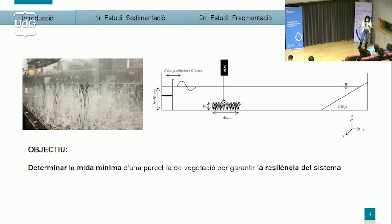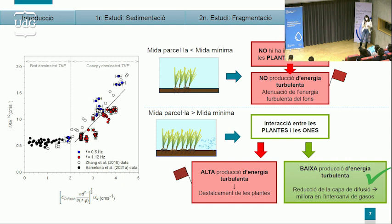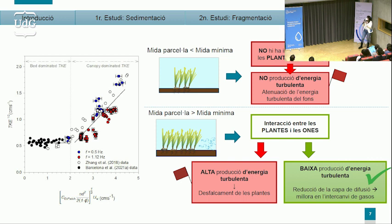A partir d'un model matemàtic, vam poder establir un llindar i vam establir que aquesta mida mínima estava en relació amb la velocitat de l'ona i amb la densitat de plantes. Vam veure que aquelles mides que eren més baixes d'aquest llindar presentaven que les plantes no interactuaven amb les ones, per tant no es generava l'energia turbulenta necessària. En canvi, si teníem una mida mínima o més gran, sí que les plantes interaccionaven amb les ones i teníem producció d'energia turbulenta. Però hem d'anar amb compte, ja que si hi ha molta energia turbulenta en el sistema, pot haver un defalcament de les plantes i el sistema no sobreviuria.